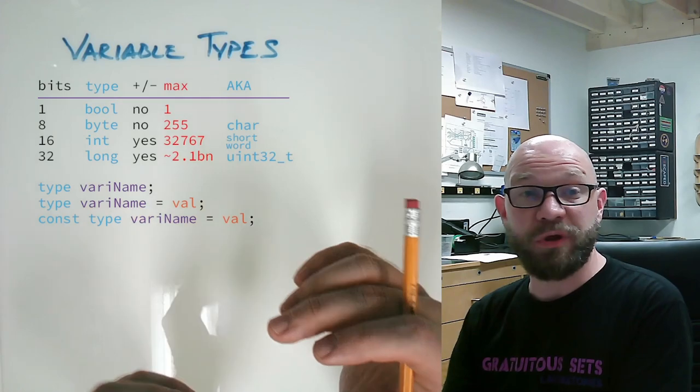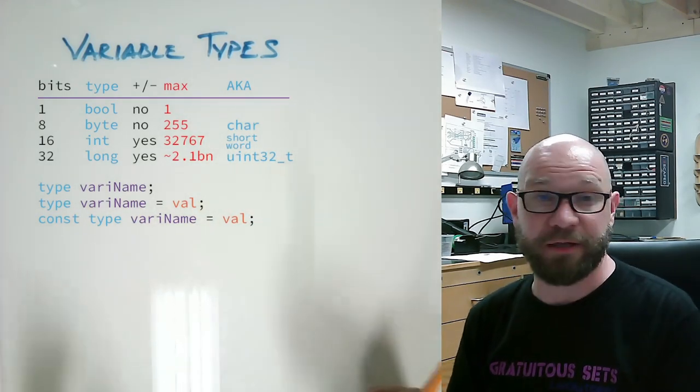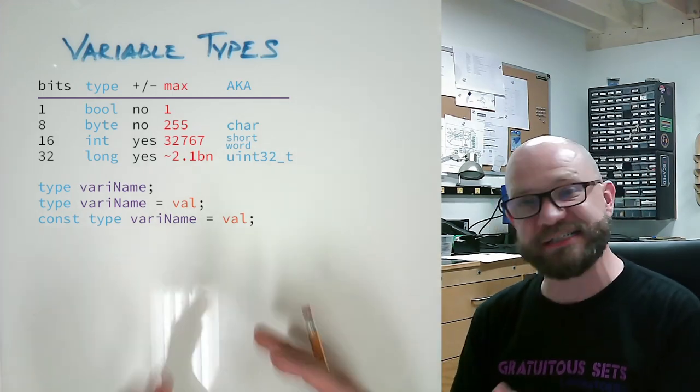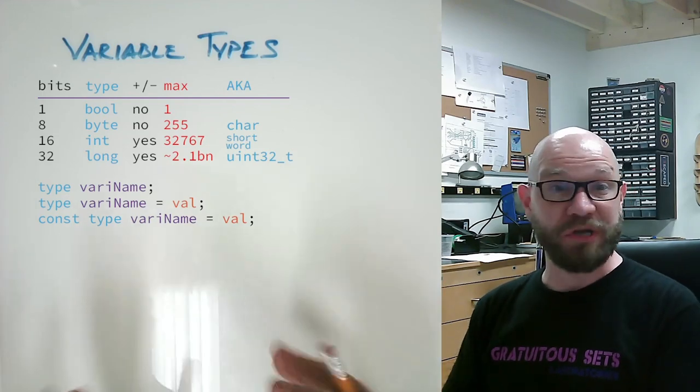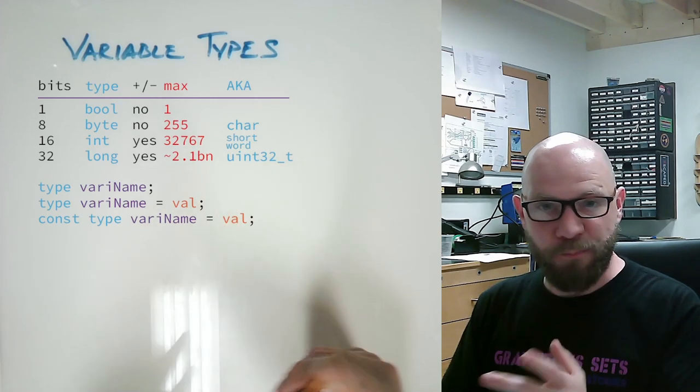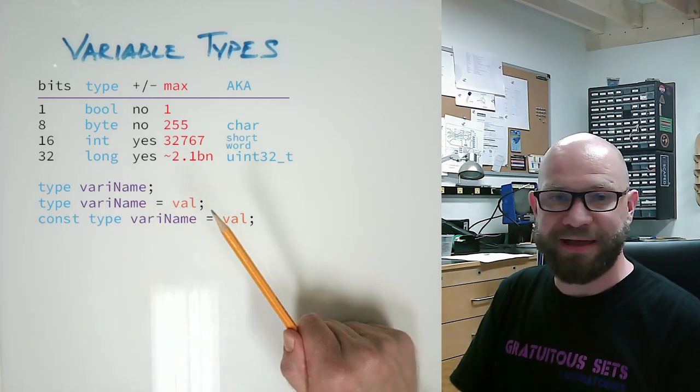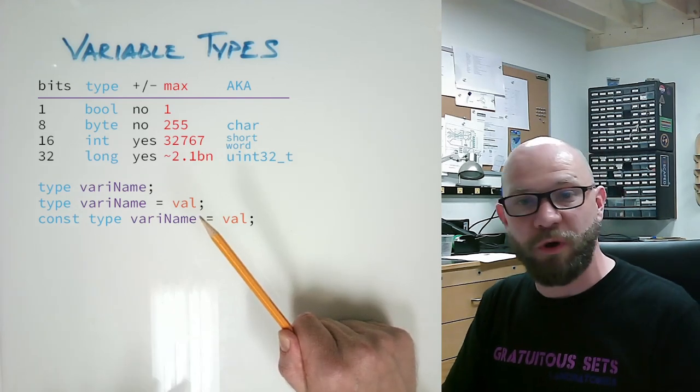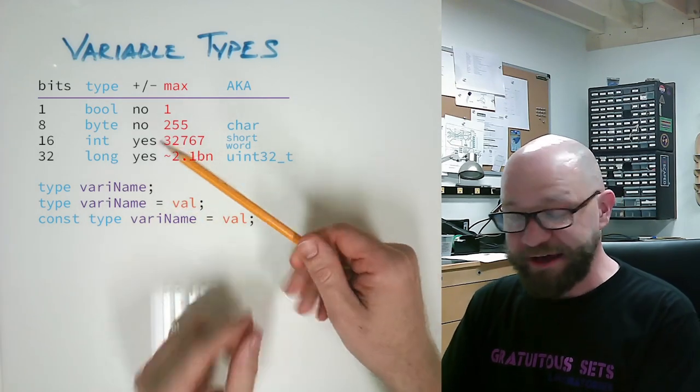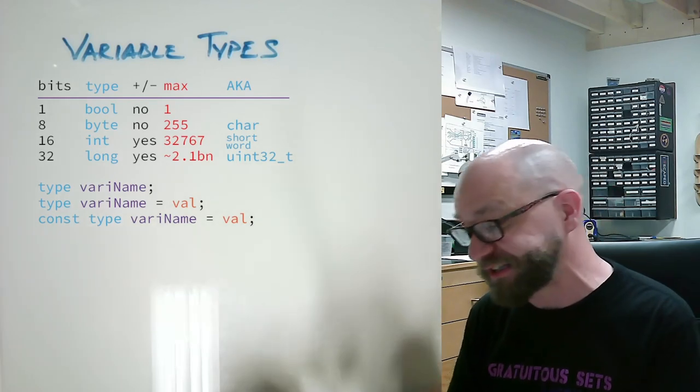So variable types is what we are talking about right here. Pretty much, the Arduino doesn't assume anything. Whatever you tell it something is, it will believe you. And when it sees something it doesn't recognize, it will want to know what it is. So that is where our types are. Pretty much anytime you have a variable, you're going to have the type, the name of the variable, and then at some point the value, whether or not it's declared initially or not. And for all intents and purposes, we have four sizes of variable, and then there are different types, whether they be signed or unsigned.